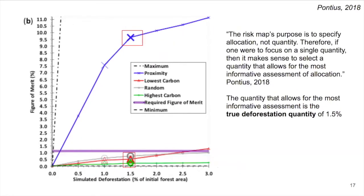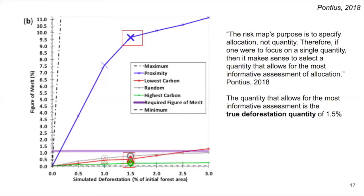The key point is that the purpose of simulating a deforestation risk map is to specify spatial allocation, not quantity. Pontius 2018 recommends uniform standards for the simulated quantity, and if one were to focus on a single quantity, it makes sense to select a quantity that allows for the most informative assessment of allocation — namely, the true deforestation quantity, shown as the bold marker for each allocation model in the red boxes.